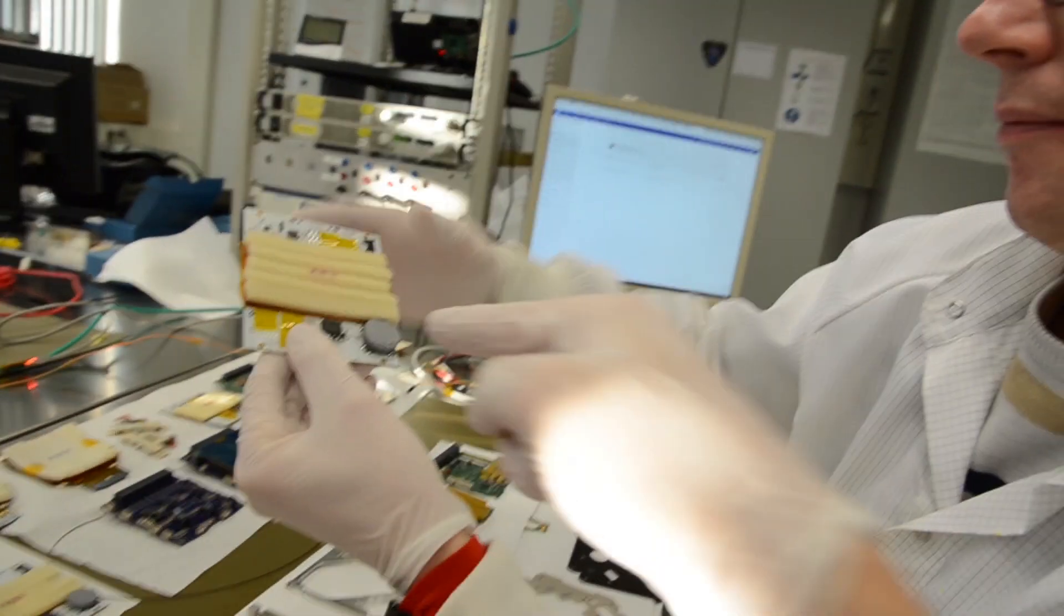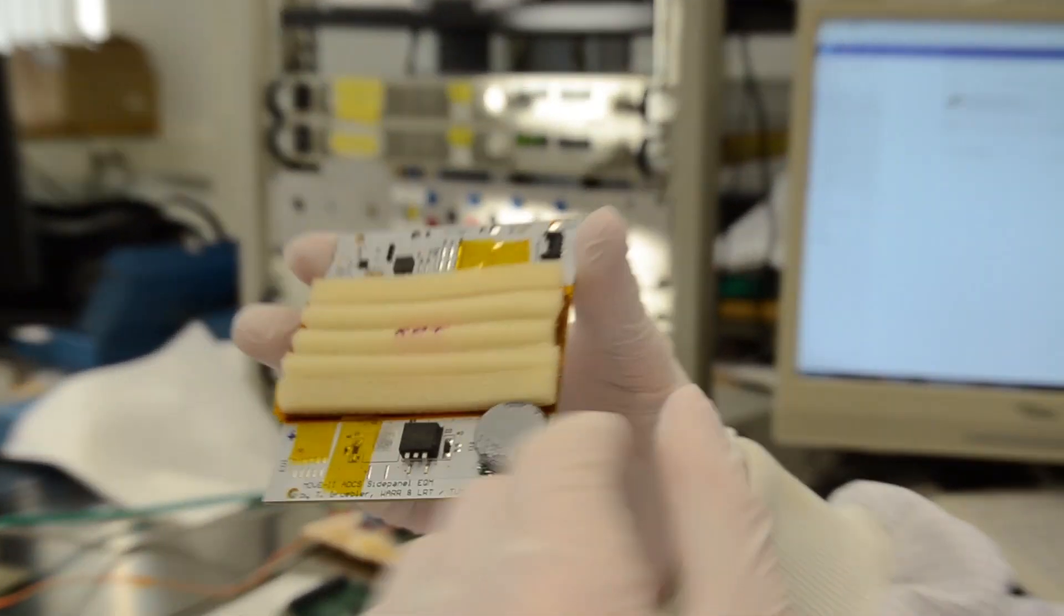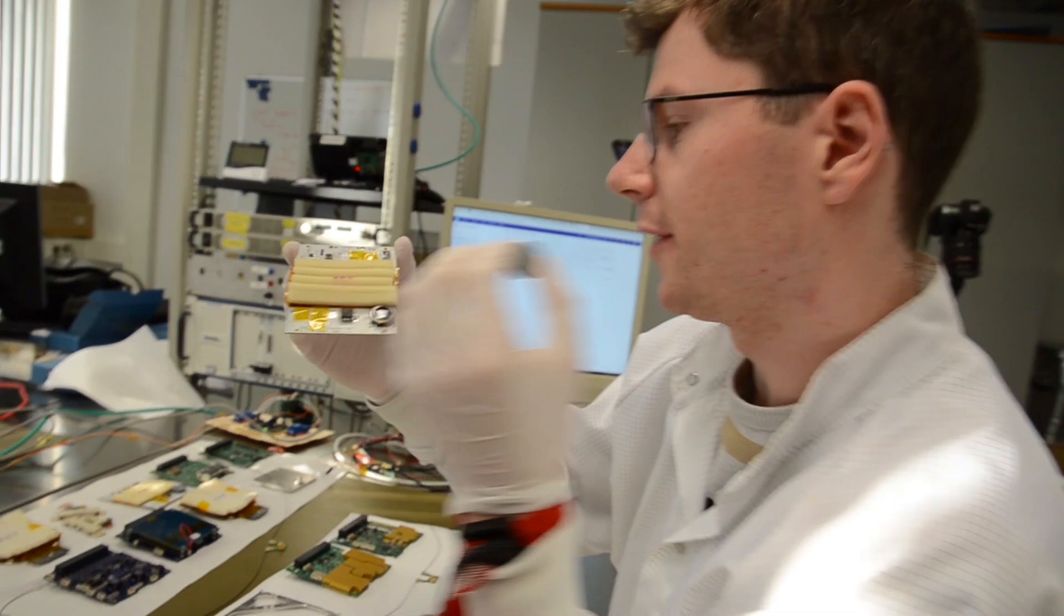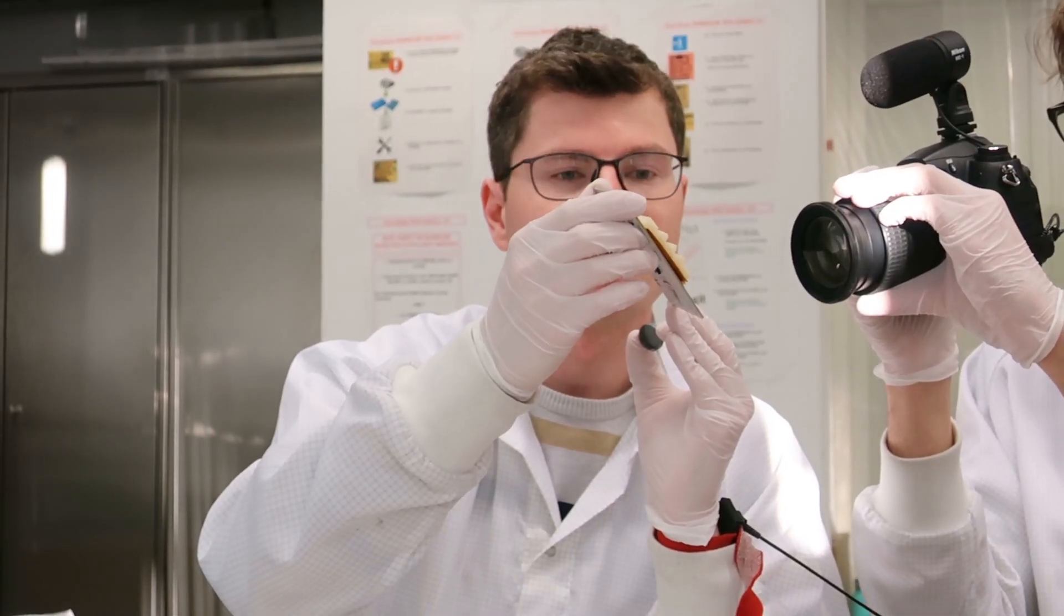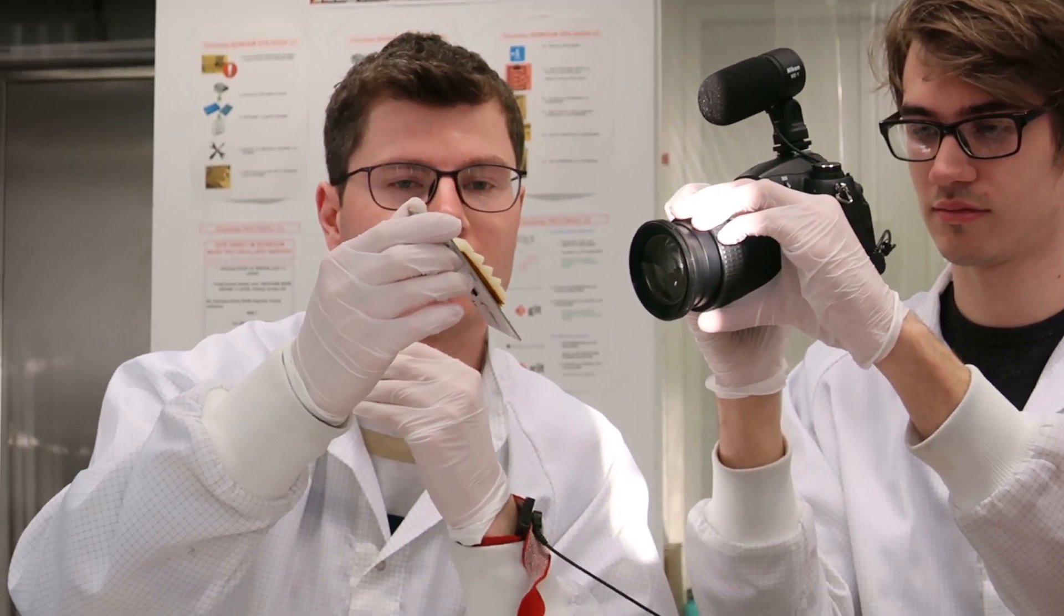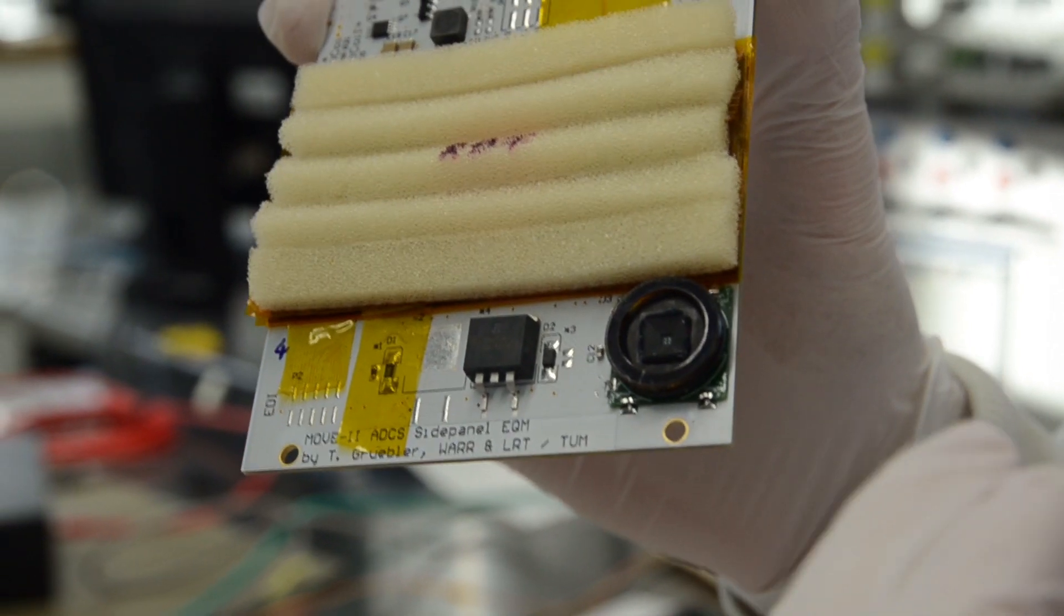And what is the big gray part on the side there? Now this is actually a protective cover that we have to remove before we send our satellite into space. I can remove it now. Under here you see the Sun sensor which gives us angular information where the Sun comes from.